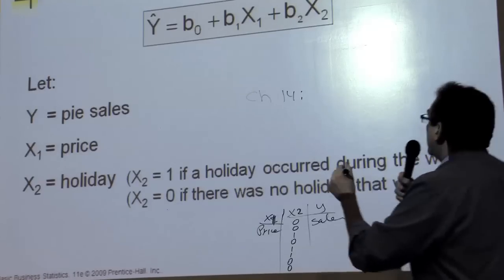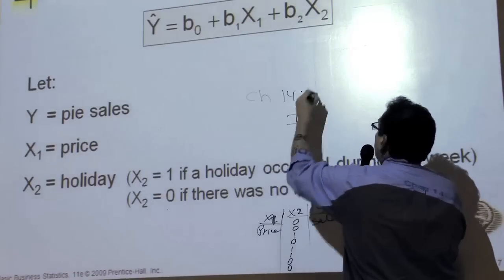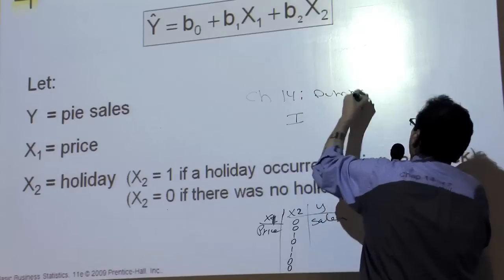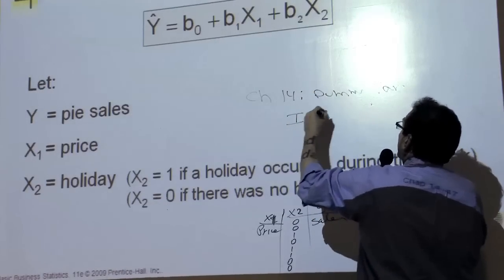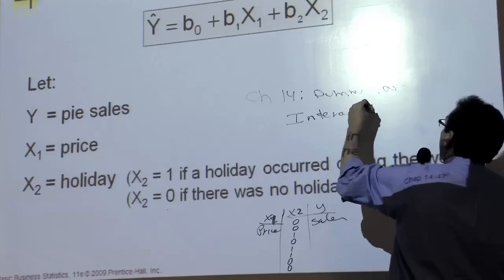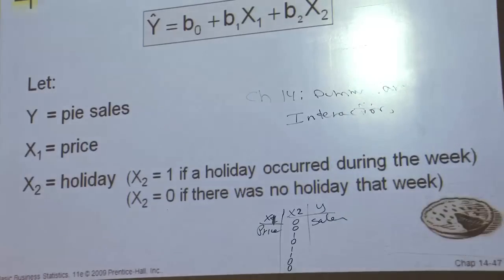But the next topic I'd like to talk about is, so this is dummy variables, and the next topic is called interaction, because now that we have two variables in the equation as opposed to chapter 13, we can also talk about the interaction between the two variables.